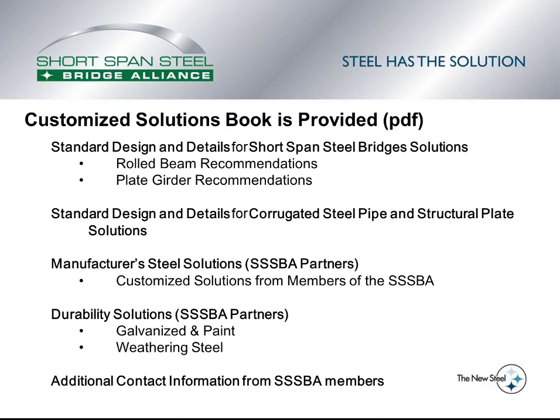A customized solution book is provided in PDF format. It includes standard designs and details for the shortspan steel bridge solutions based on the inputs entered, including rolled beam and plate girder recommendations. There are also standard designs for corrugated steel pipe and structural plate solutions. Manufacturer steel solutions from partners within the Shortspan Steel Bridge Alliance supply the owner or designer with alternatives meeting their bridge needs. Durability solutions from alliance partners give information on galvanizing, painting, and weathering steel. At the end of the solutions book is a list of contact information from alliance members that can be contacted if the owner or designer has questions.